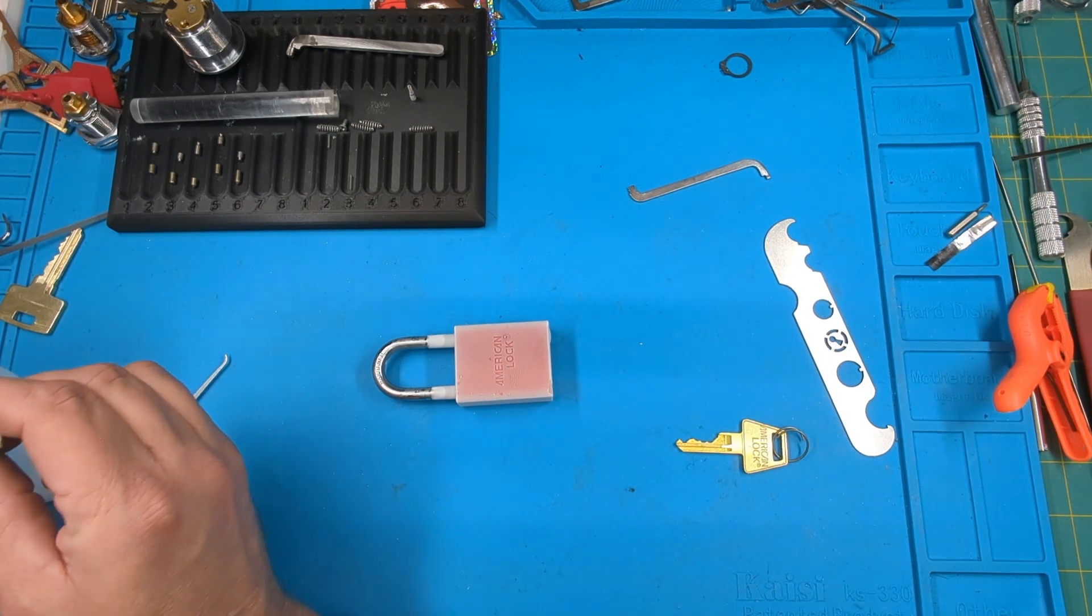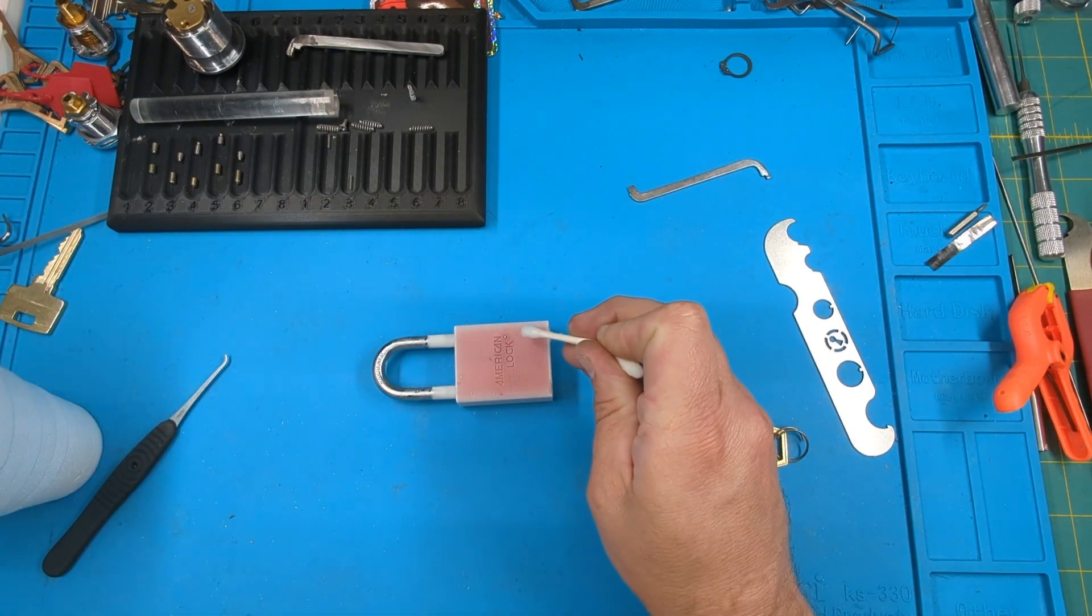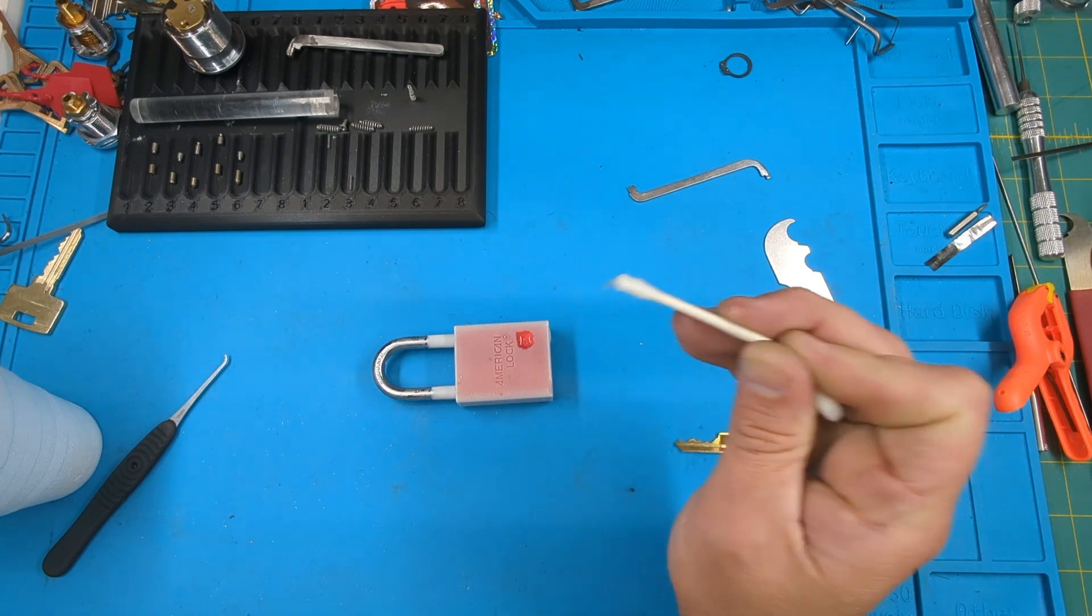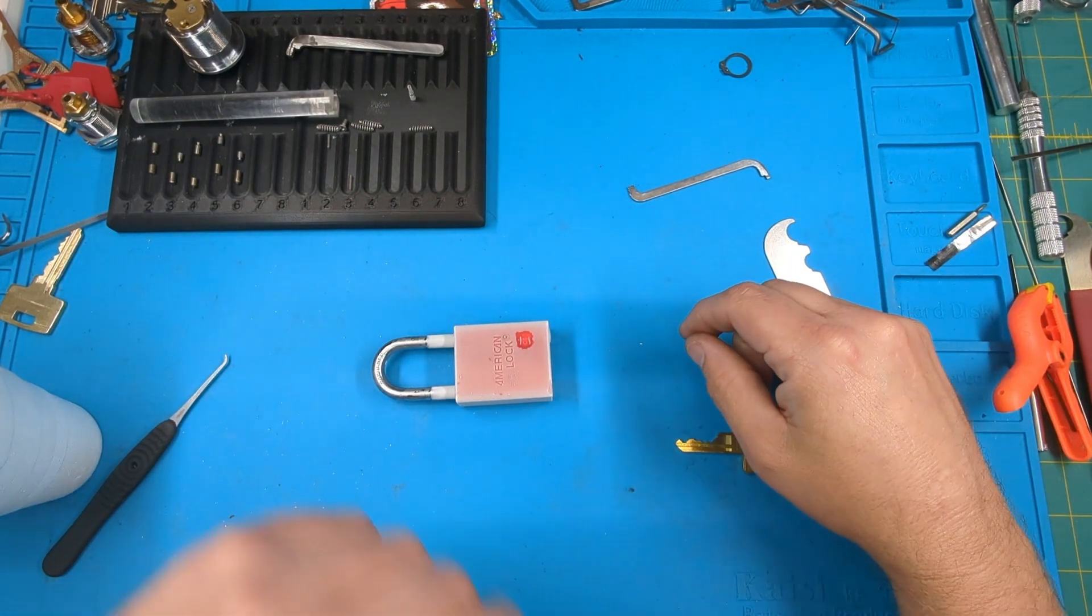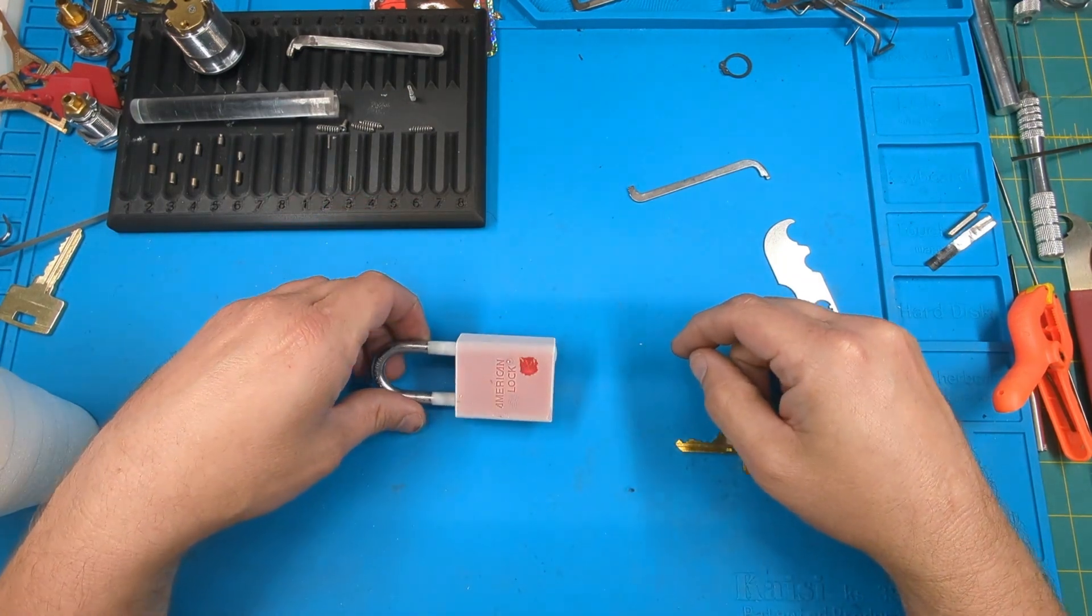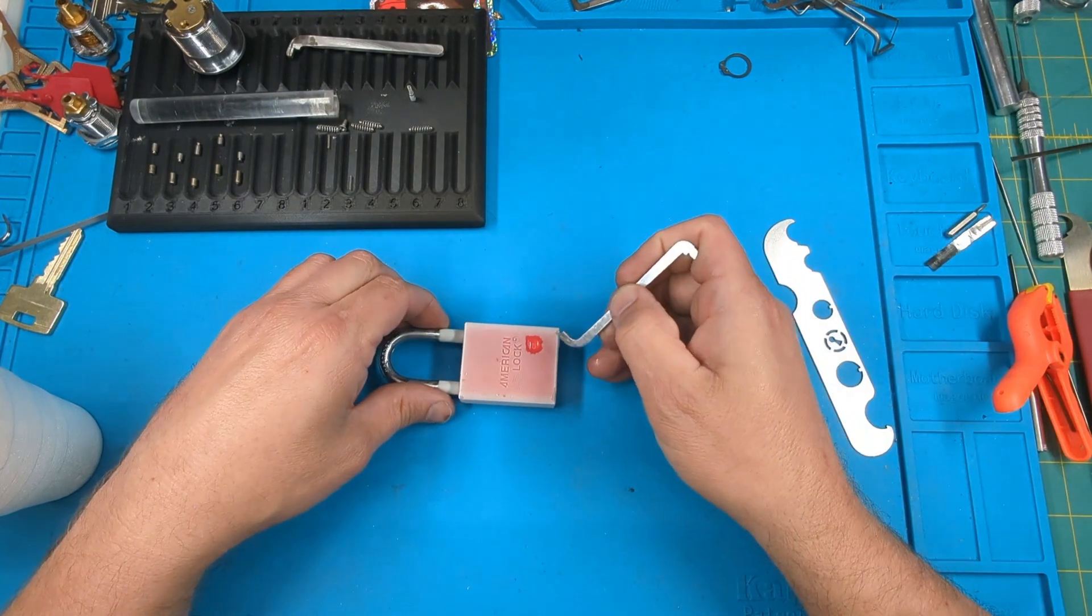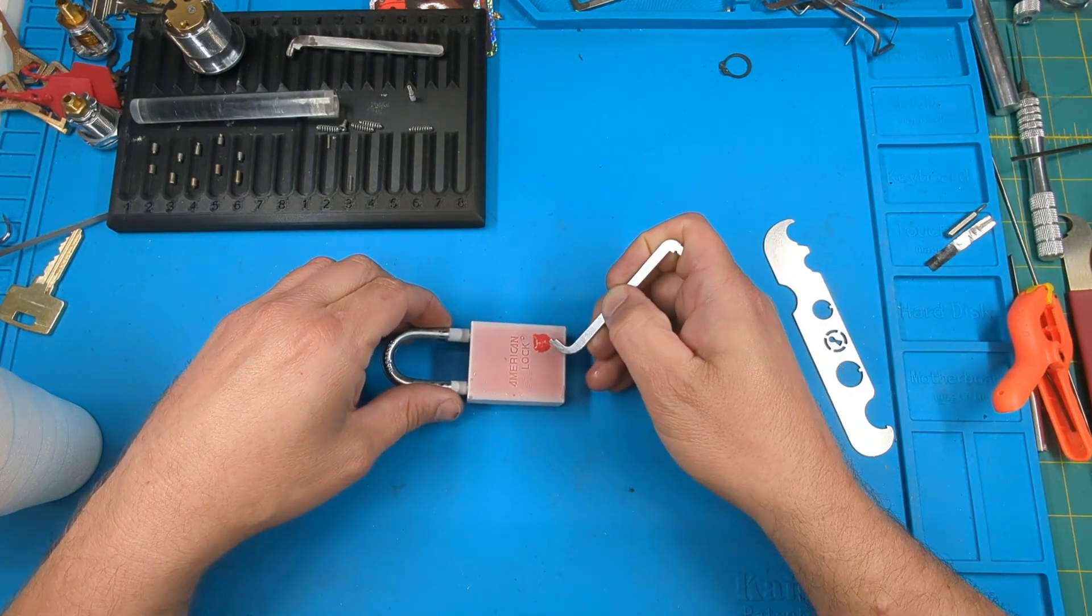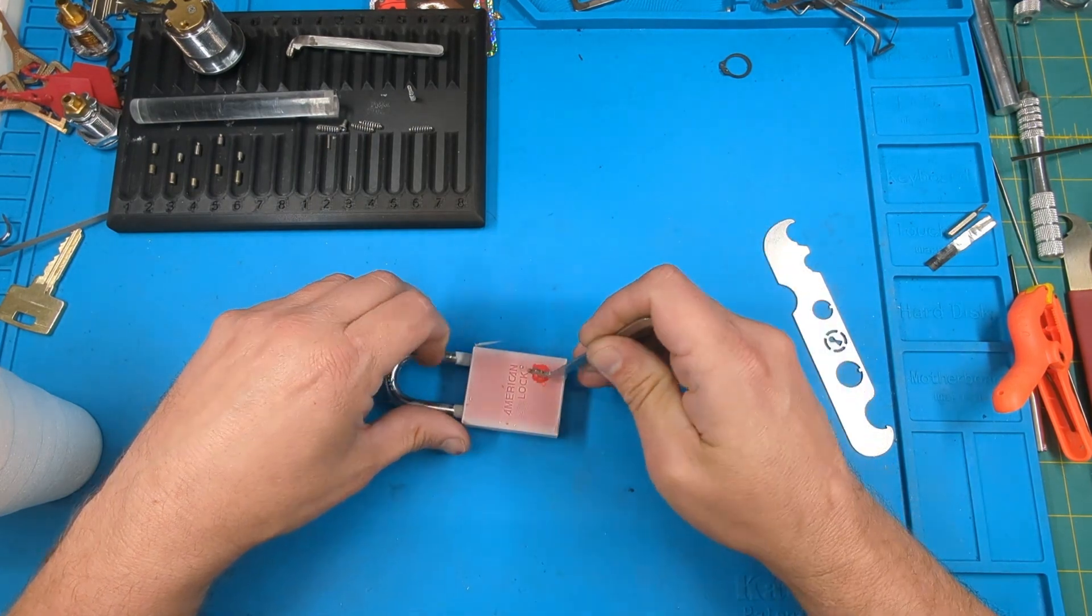So the first thing I'm going to do is show that the lock is cold enough to freeze water, which I think it did. Let's see. Yep, that's on there, it's not coming off.